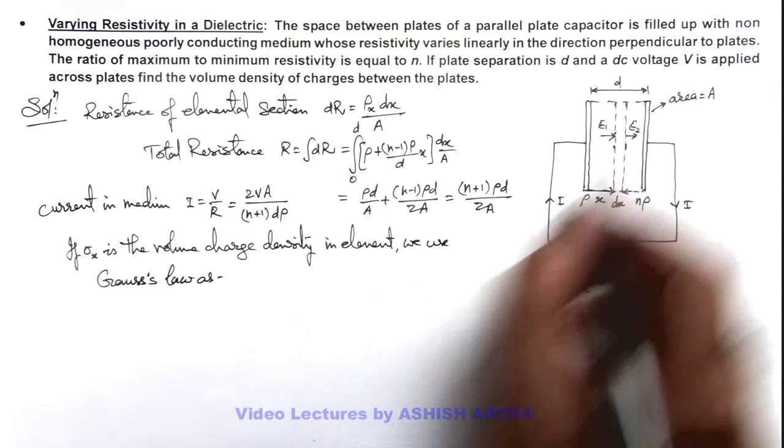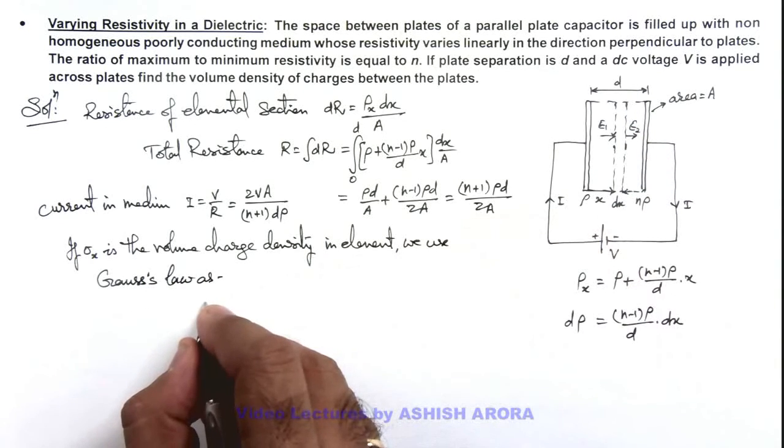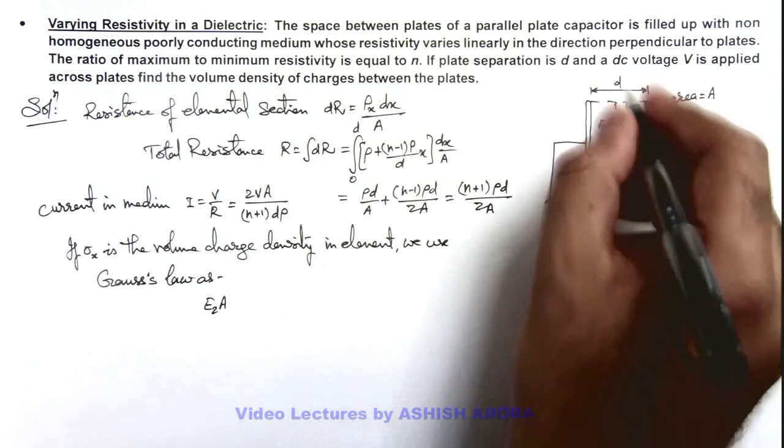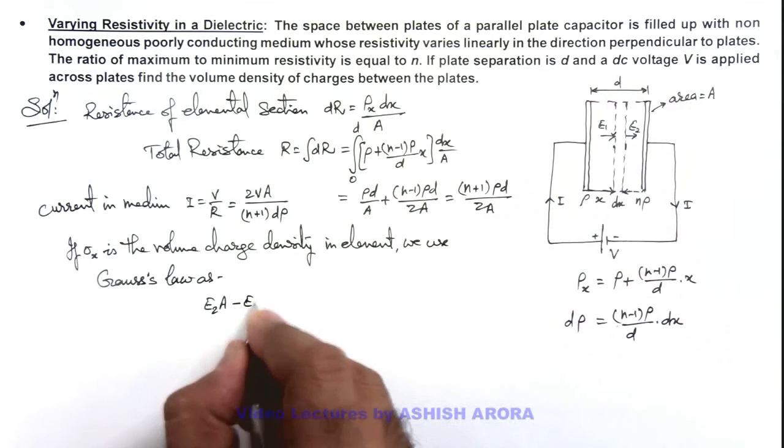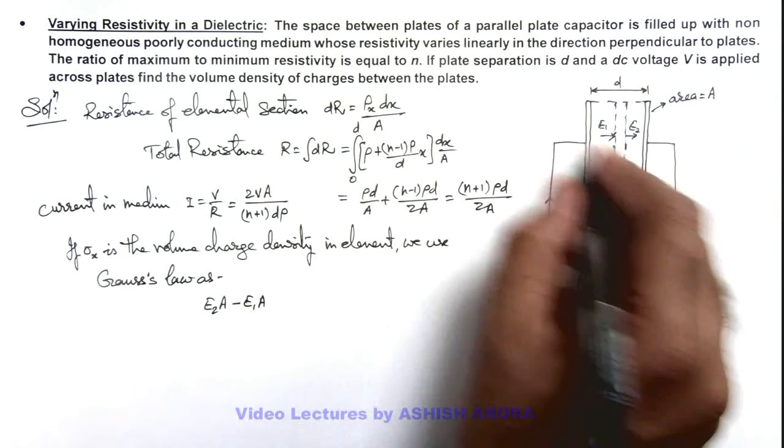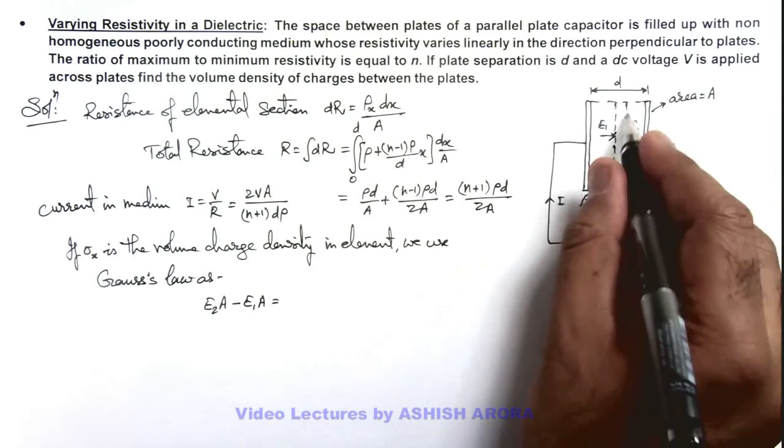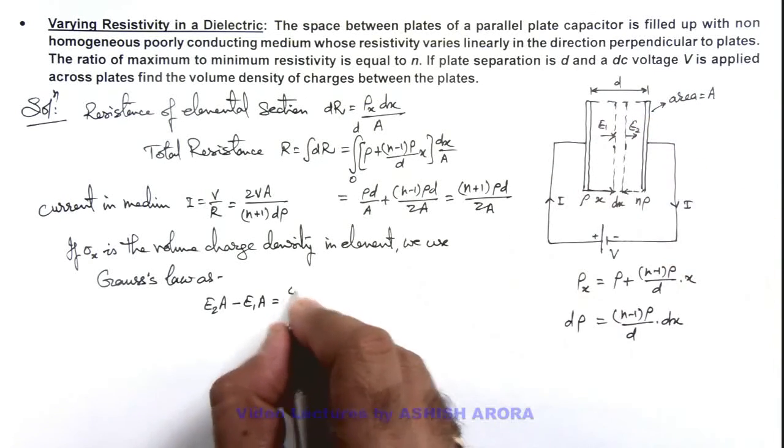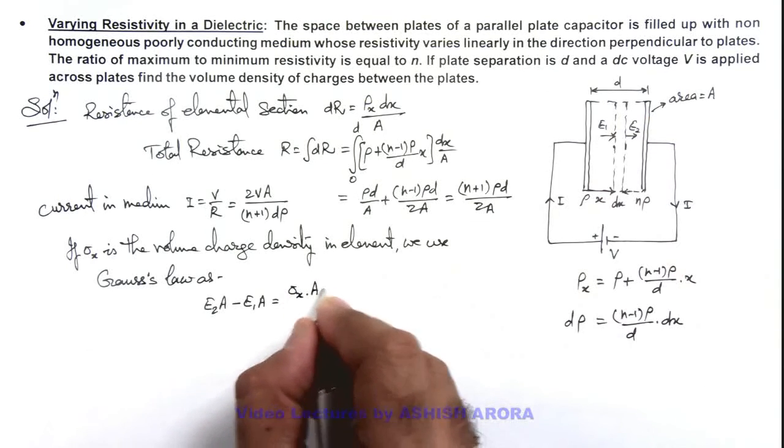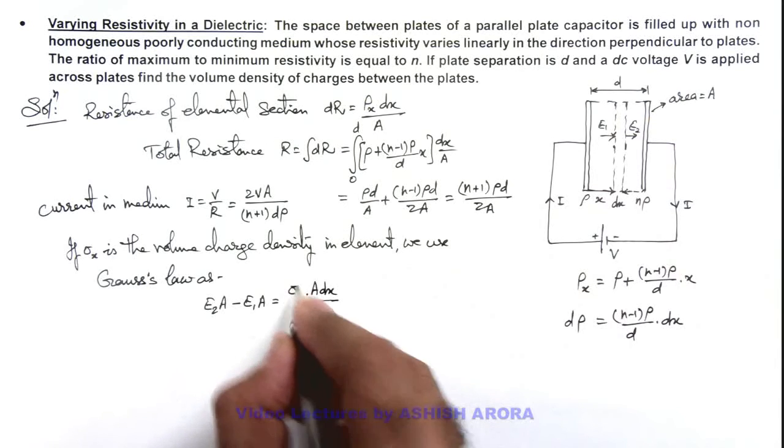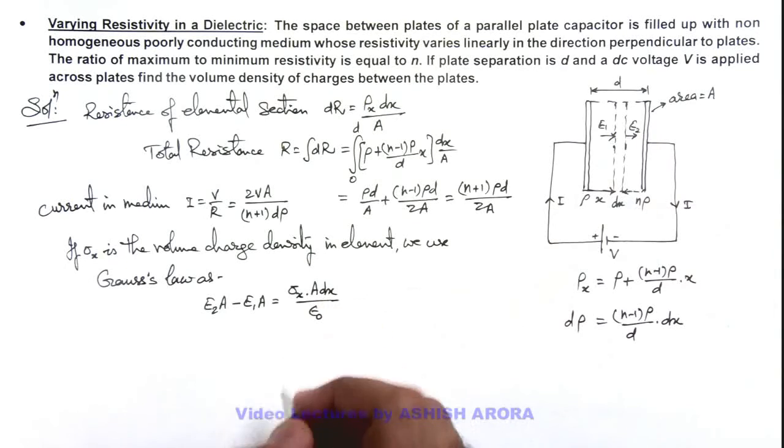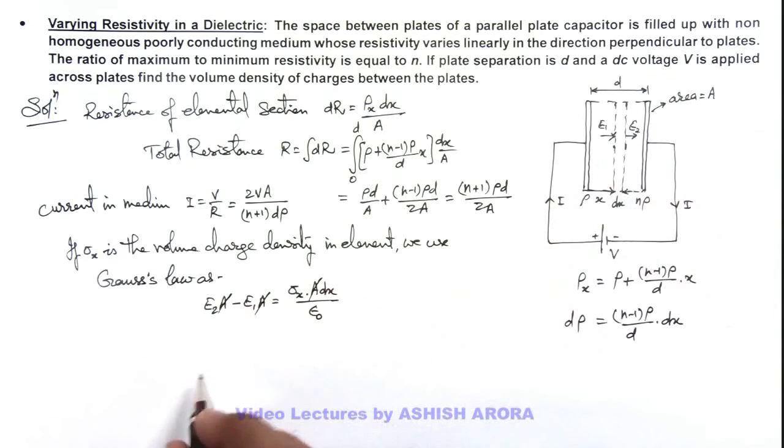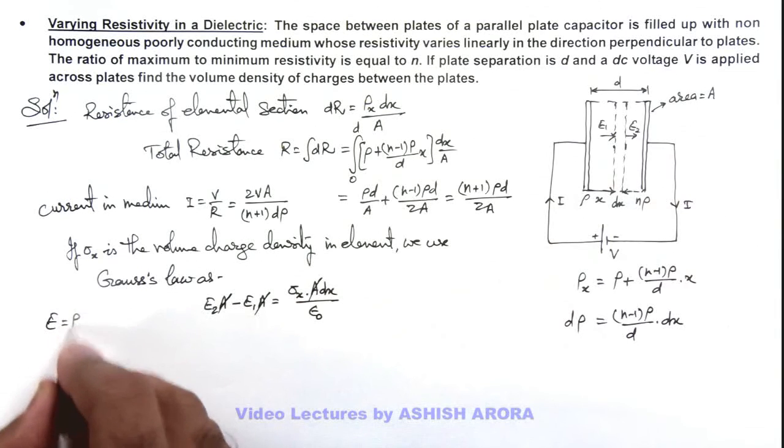Here for this elemental section we can write E₂A, if A is the total area of this section as it is parallel to these plates, minus E₁A, this is outgoing flux, this is the flux which is getting in, is equal to the charge enclosed within this section which can be written as σₓ multiplied by A·dx/ε₀. If σₓ is the volume charge density, the volume of this region will be A·dx. Here this A gets cancelled out.